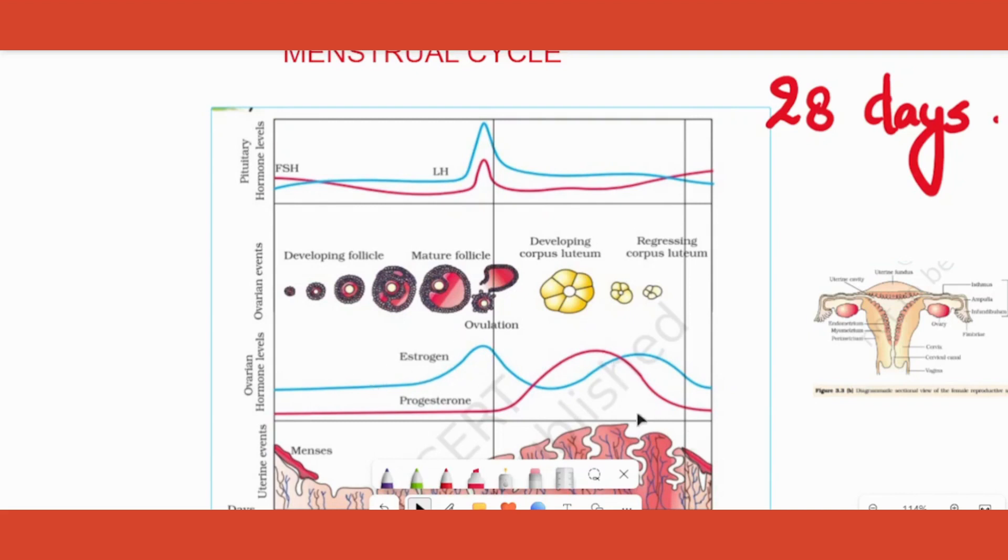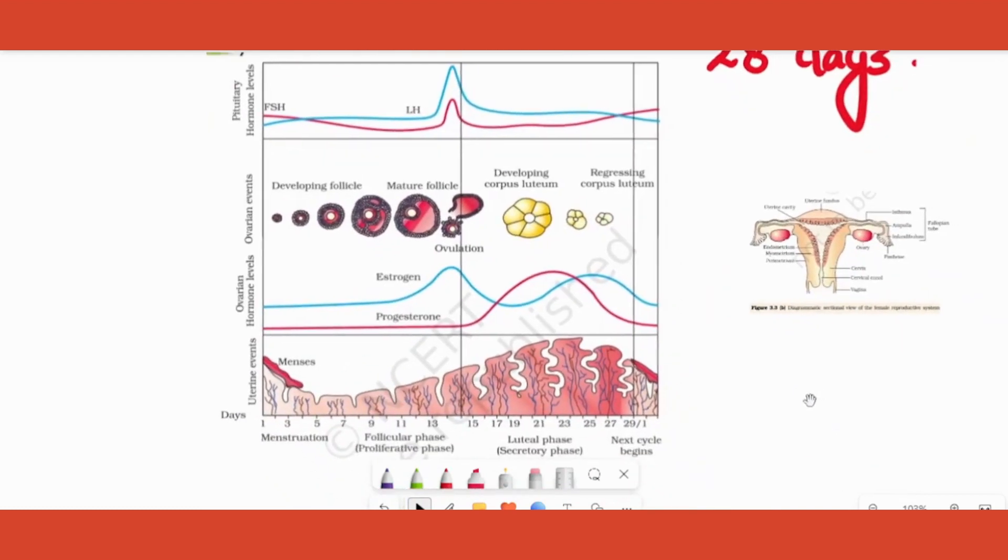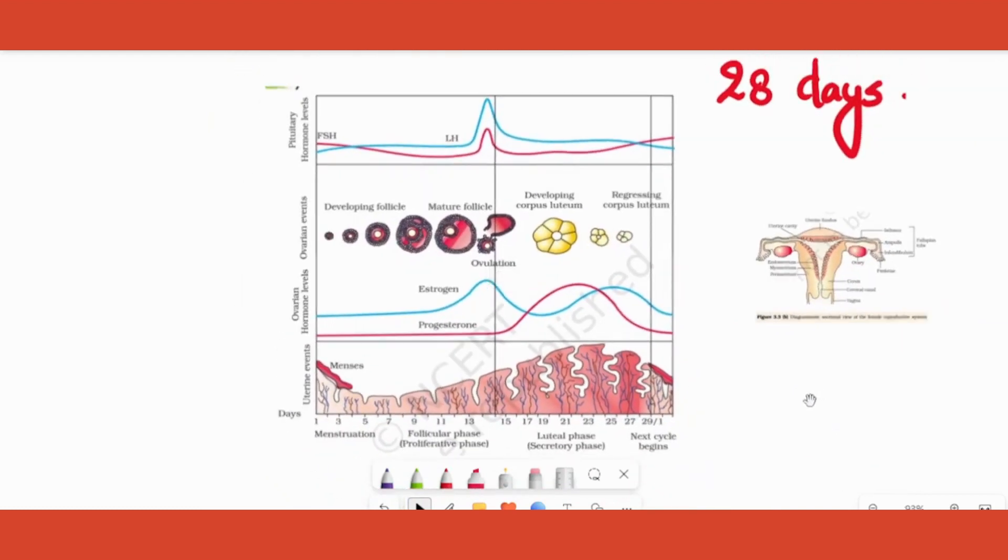Certain hormones are called as ovarian hormones and other ones are called as pituitary hormones. Ovarian hormones that control menstrual cycle are estrogen and progesterone. Other one is from the pituitary: two hormones you can see, one is called as FSH, another is called as LH.